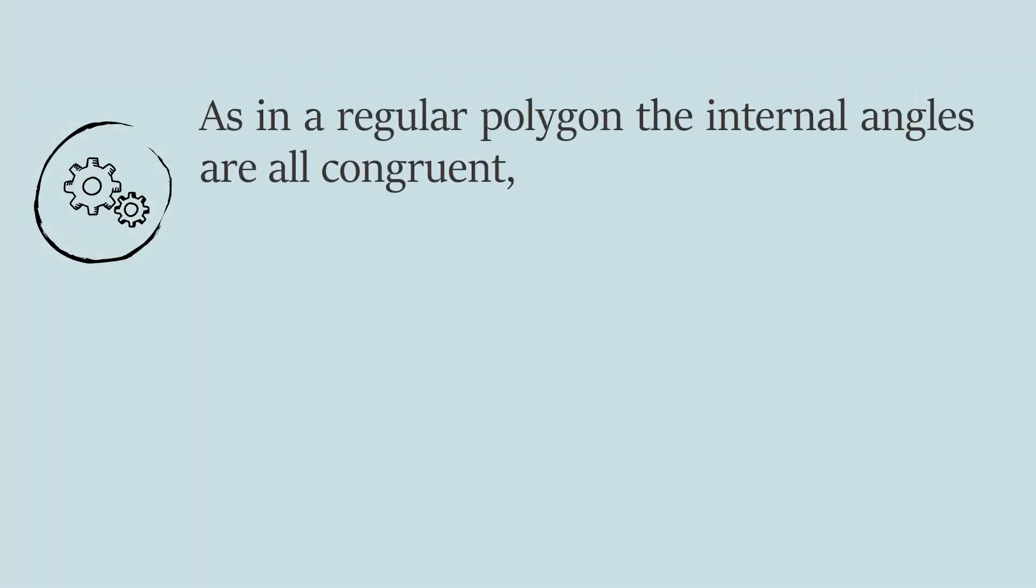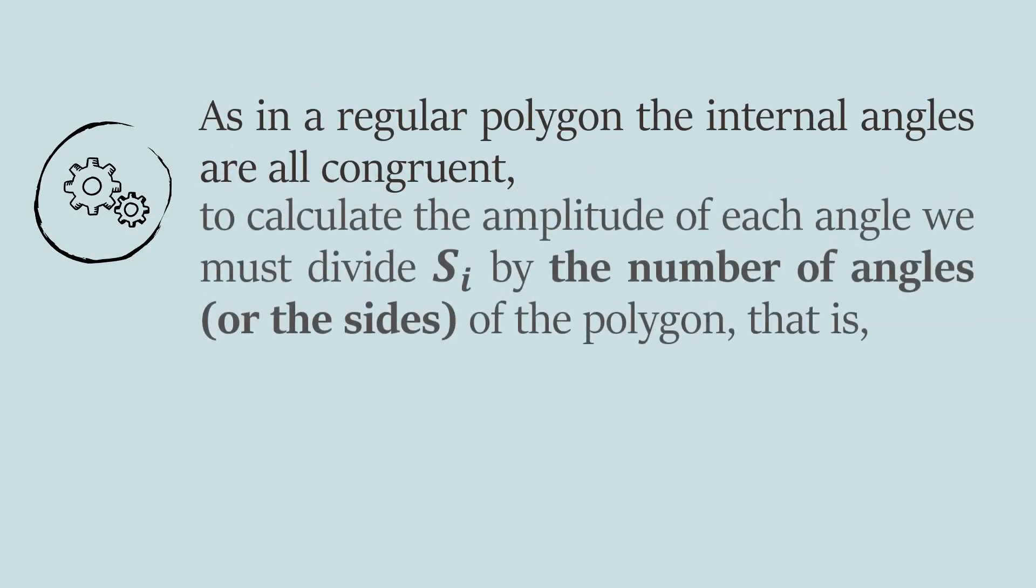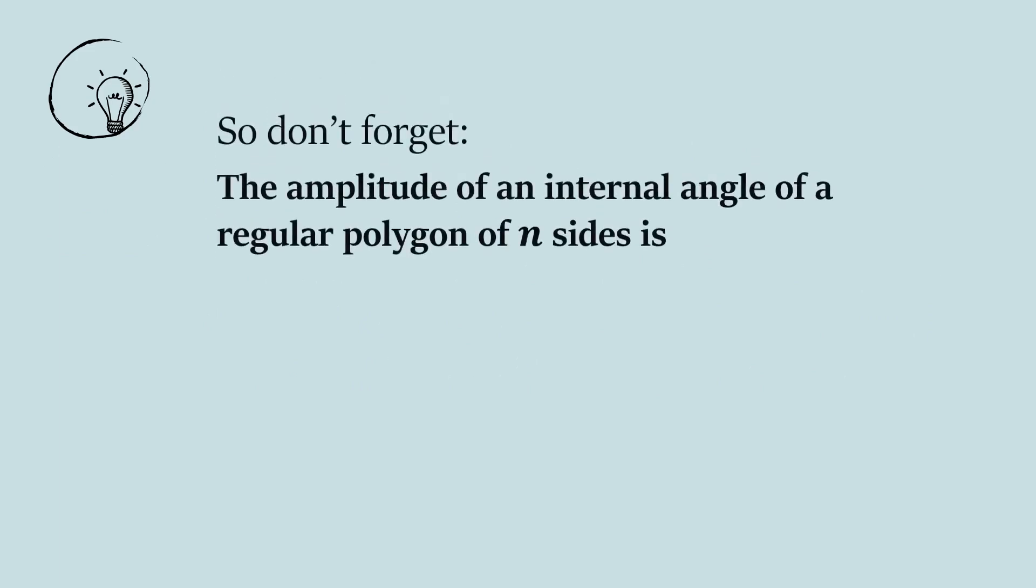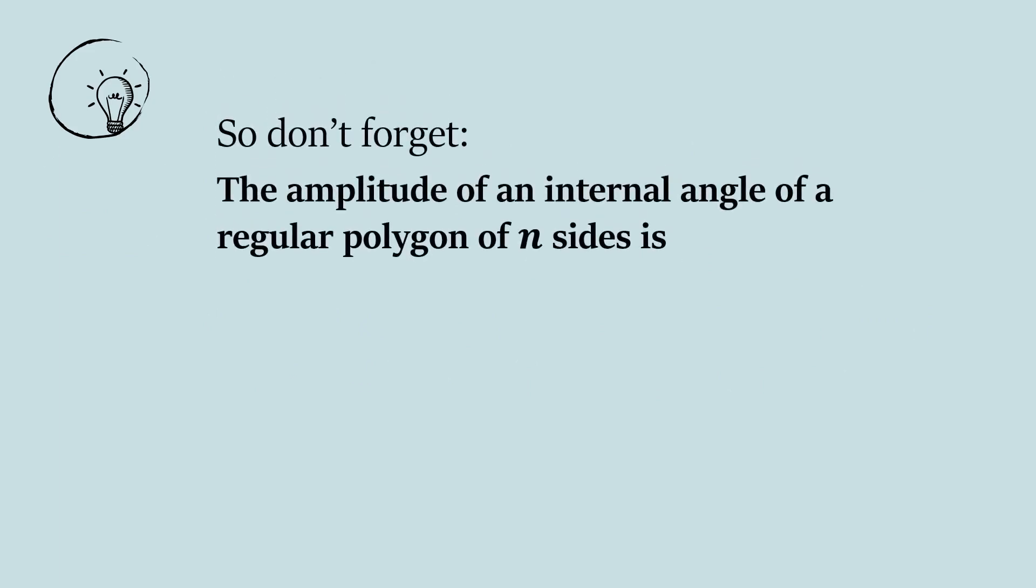As in a regular polygon the angles are all congruent, to calculate the amplitude of each angle, we must divide S_I by the number of angles (or sides) of the polygon. So don't forget: the amplitude of an internal angle of a regular polygon of n sides is S_I divided by n.